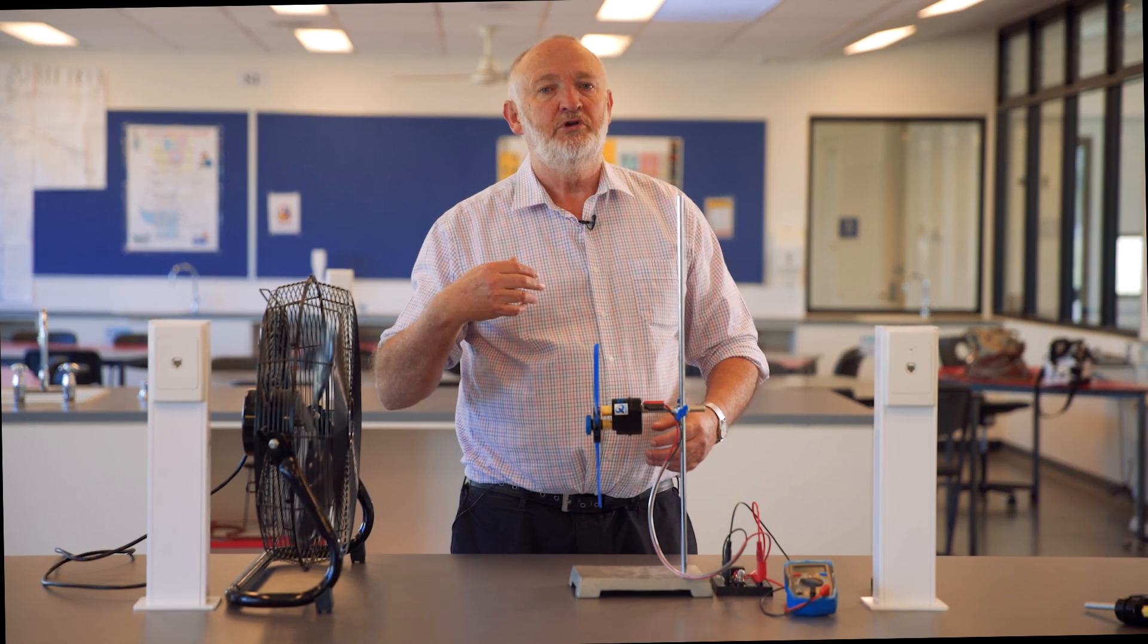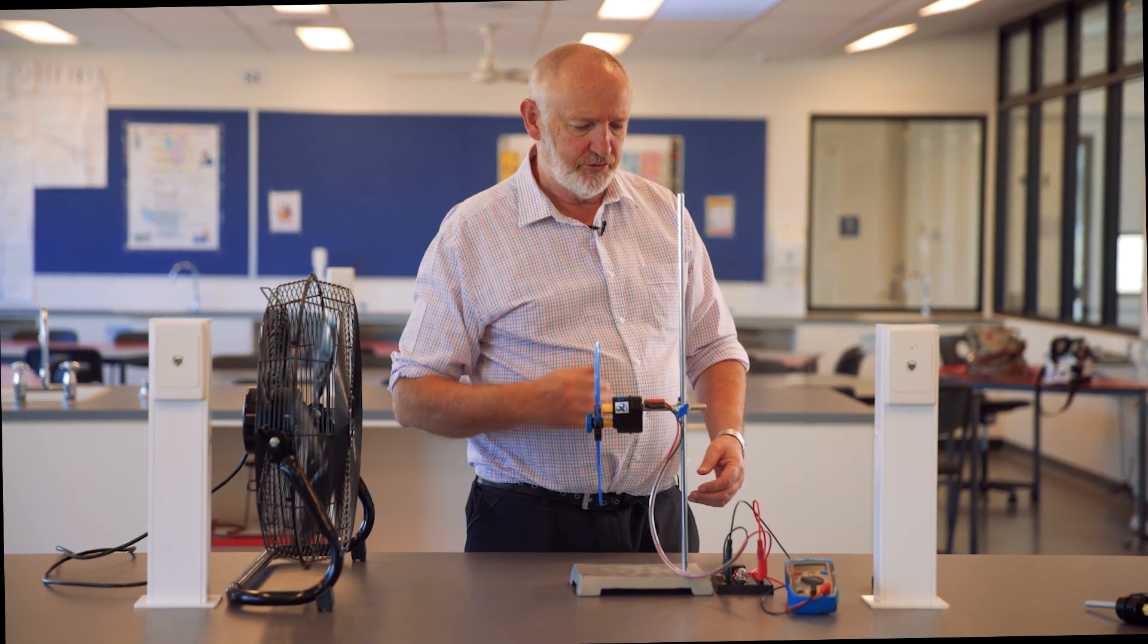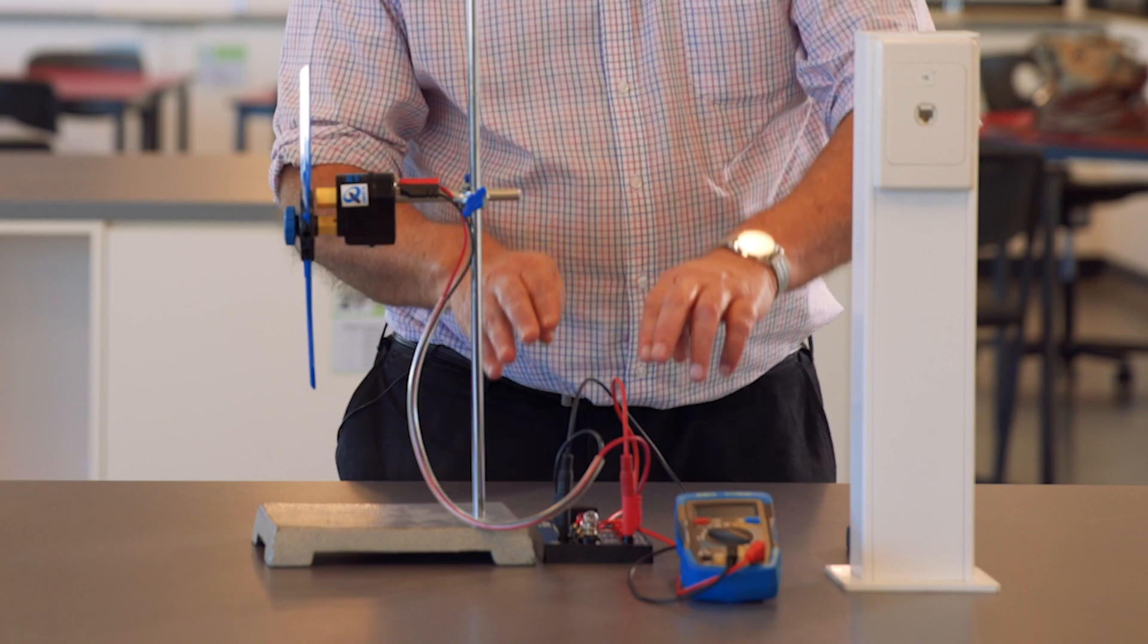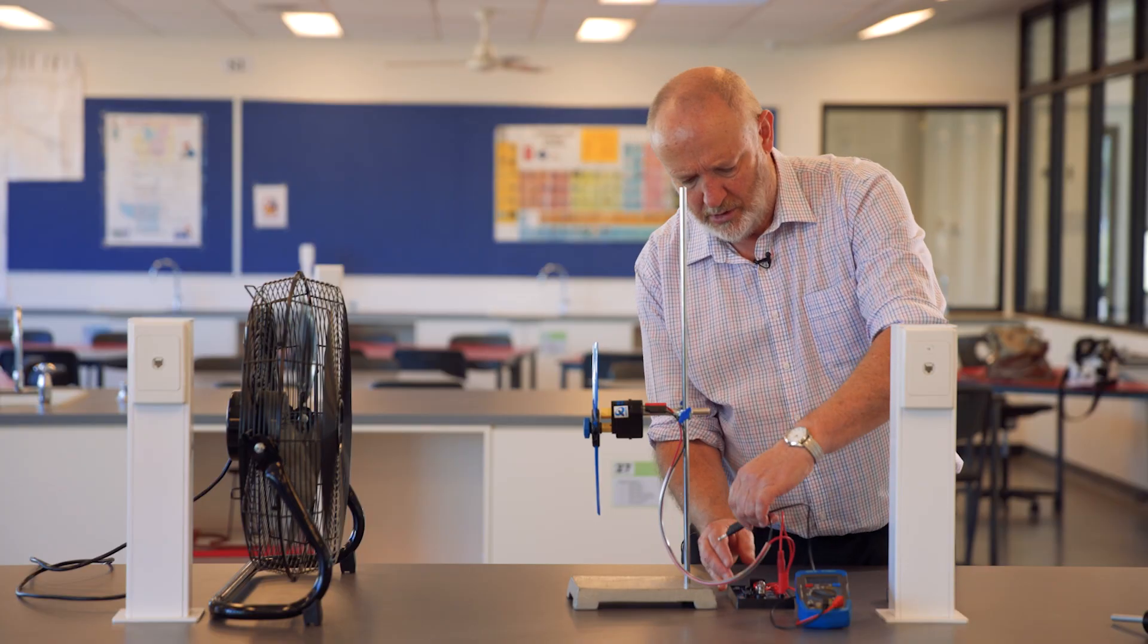If we want to measure power, we need to measure the current going through the circuit as well. So the voltmeter just went across the light bulb. Now I'll take that out.